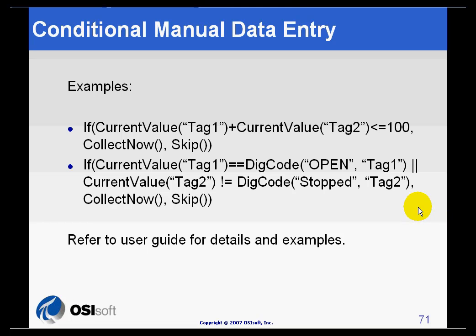The total number of characters, including spaces, of a Conditional Manual Data Entry formula cannot exceed 1000 to save database space. If a formula has more than 1000 characters, Manual Logger will automatically truncate extra characters and only validate against the first 1000 characters of the formula.